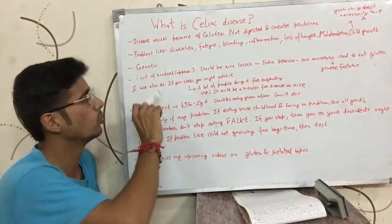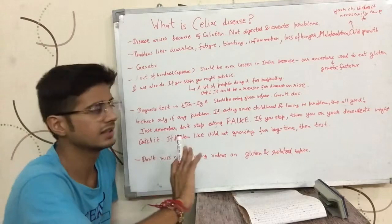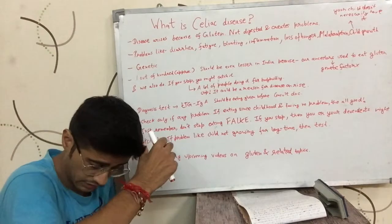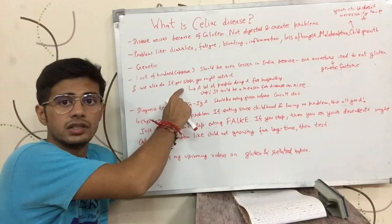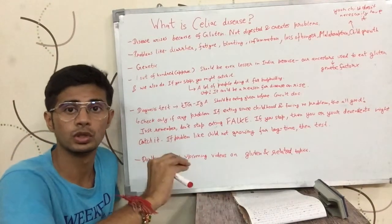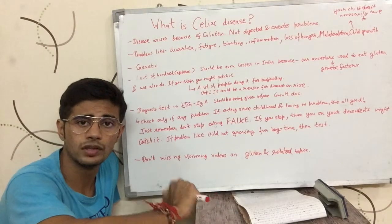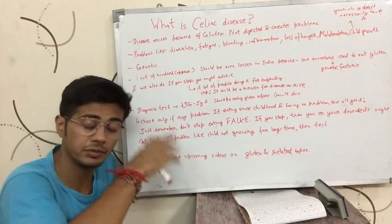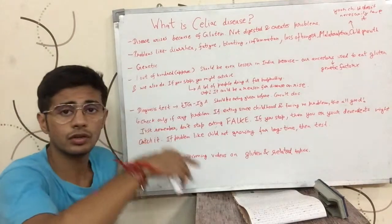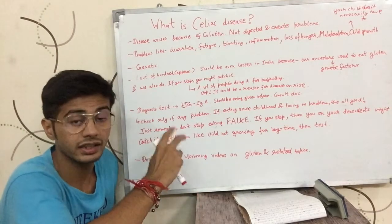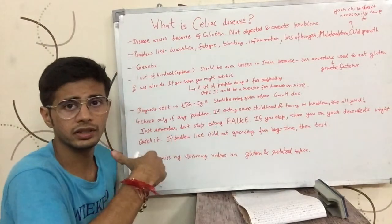About 1 in 100 people have celiac disease, and this number can be even lesser in India. If you stop eating gluten, then you might develop the disease and become gluten intolerant. Our ancestors have been eating gluten — wheat chapati — for hundreds or thousands of years, so it is less likely that the genetic factor is strongly working against us.